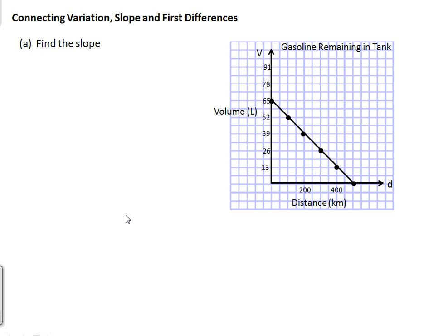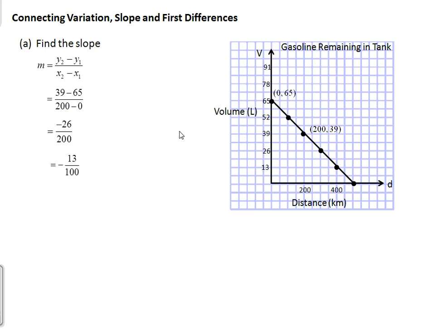So let's go ahead and find the slope. We're going to use the formula: slope equals y2 minus y1 over x2 minus x1, or rise over run. To do this we need to choose any two points on this graph. It doesn't matter which two points we choose, and I've arbitrarily chosen (0, 65) and (200, 39). Substituting those values into the formula we have 39 minus 65 over 200 minus 0, which simplifies to negative 26 over 200, or negative 13 over 100.